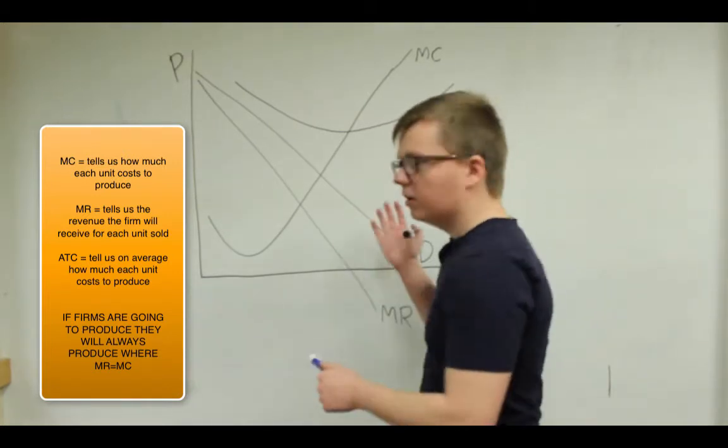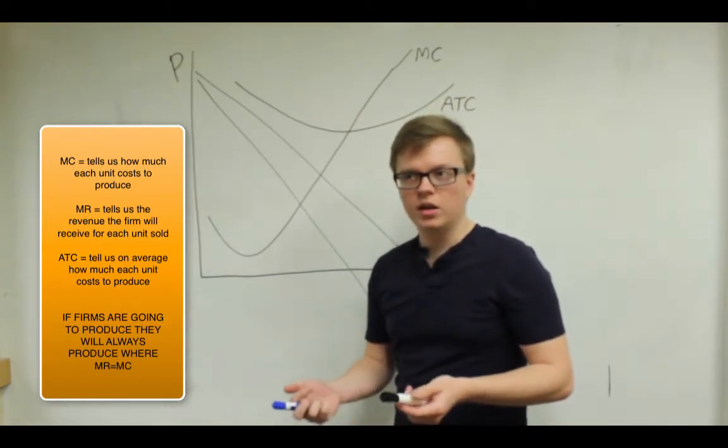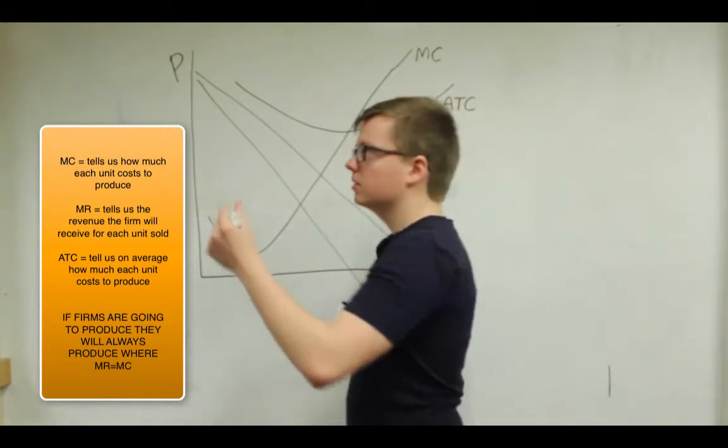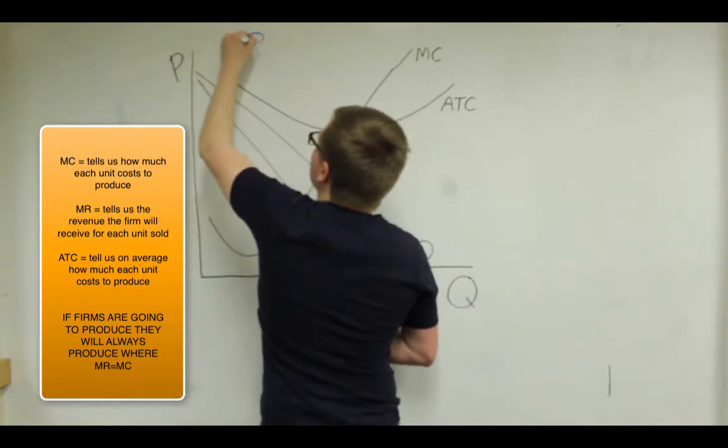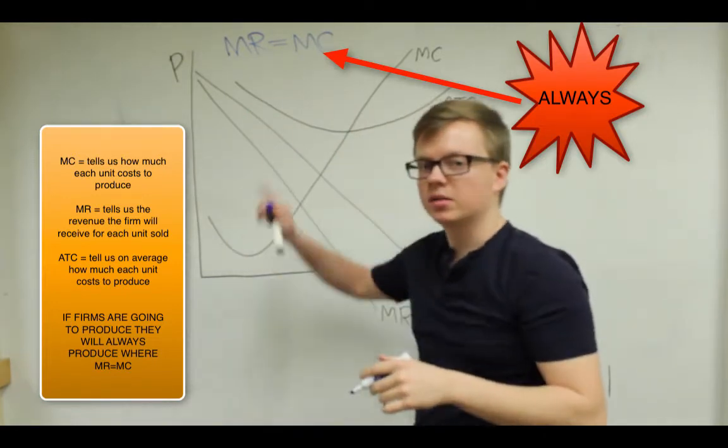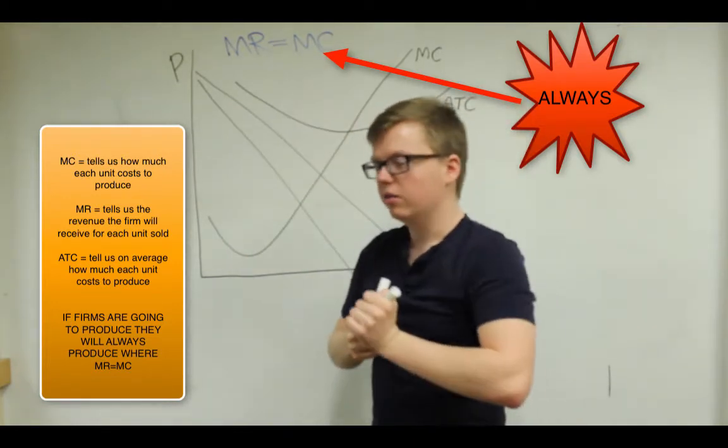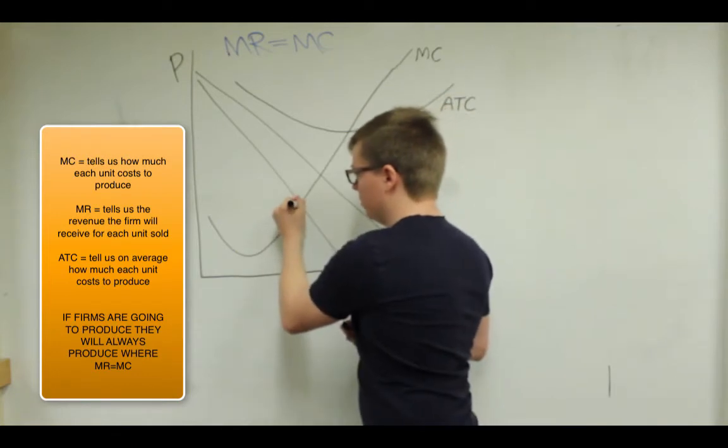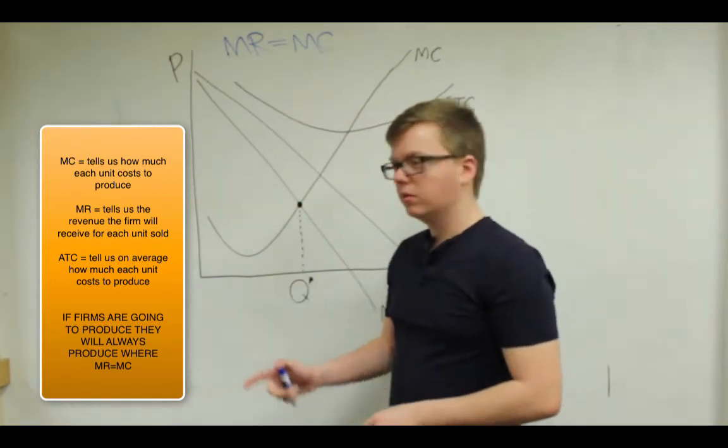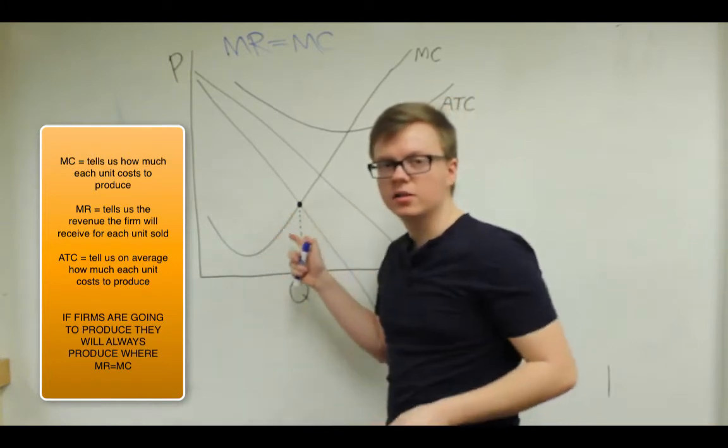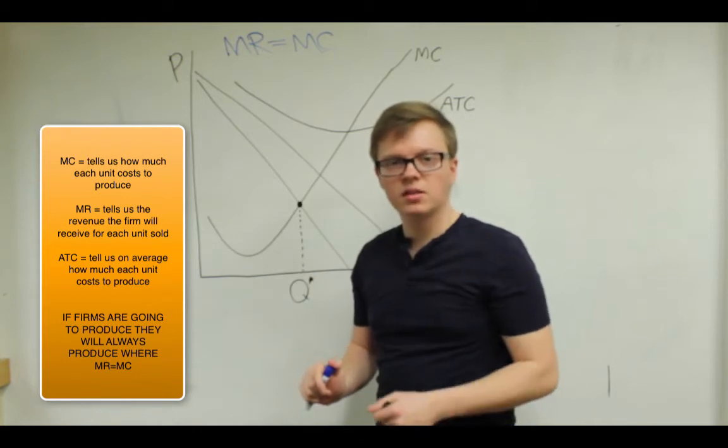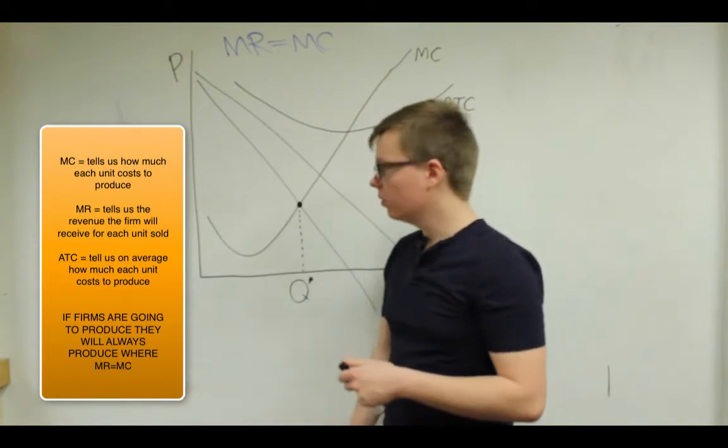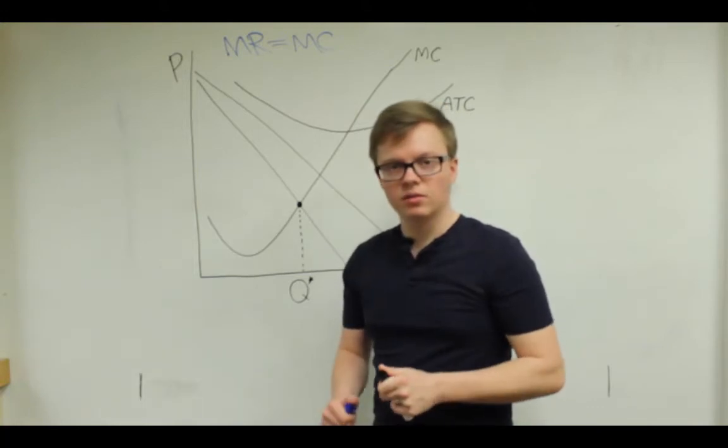So the key thing to remember, with any problem, it doesn't matter if the firm's perfectly competitive, if it's a monopoly or what, but to maximize profits, a firm will produce where marginal revenue equals marginal cost. So this is really important to remember. And if we look at this graph, marginal revenue is this one, marginal cost is this one, they intersect right here. So this quantity where marginal revenue equals marginal cost is either the profit-maximizing quantity or if the firm is operating at a loss, it's the loss-minimizing quantity. Either way, they're getting the most money they can.